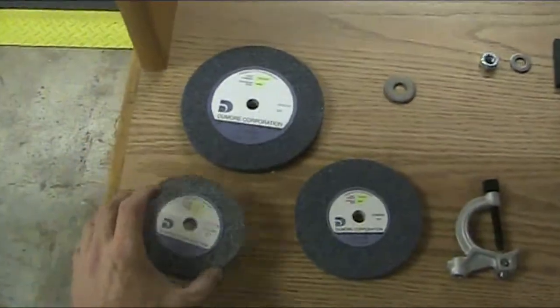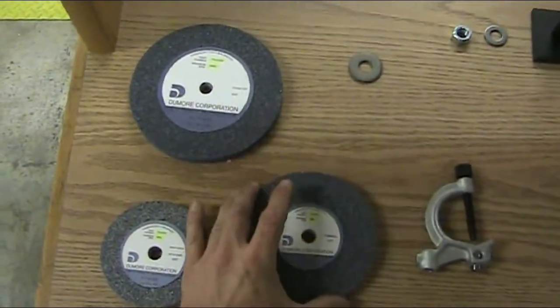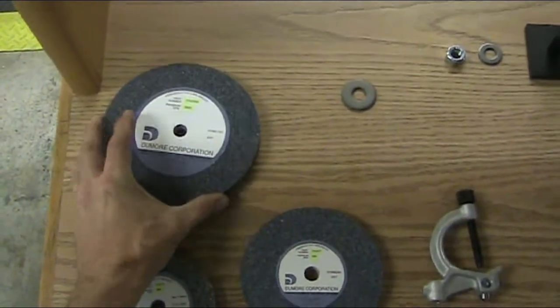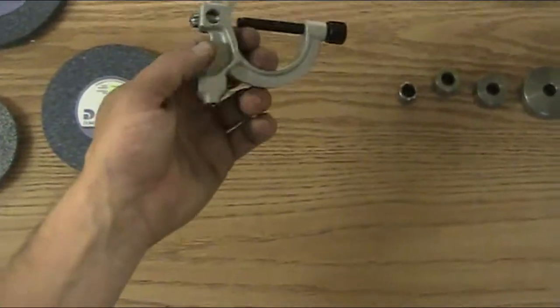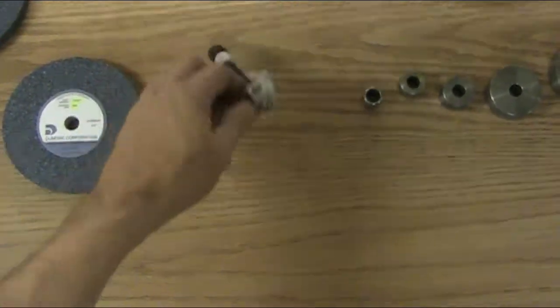You have a four inch wheel, a five inch wheel, and a six inch wheel. You have the wheel dresser that has a diamond tip in it.